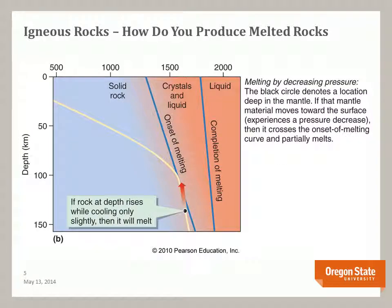We can enhance the melting potential of rocks through a couple of processes. One process is by bringing the rock closer to the surface: as rocks move closer to the surface, pressure decreases and we can cross the melting boundary, therefore starting to melt the rock. This is called decompression melting. The rock moves to lower pressures — higher in the earth's crust — and then starts melting.